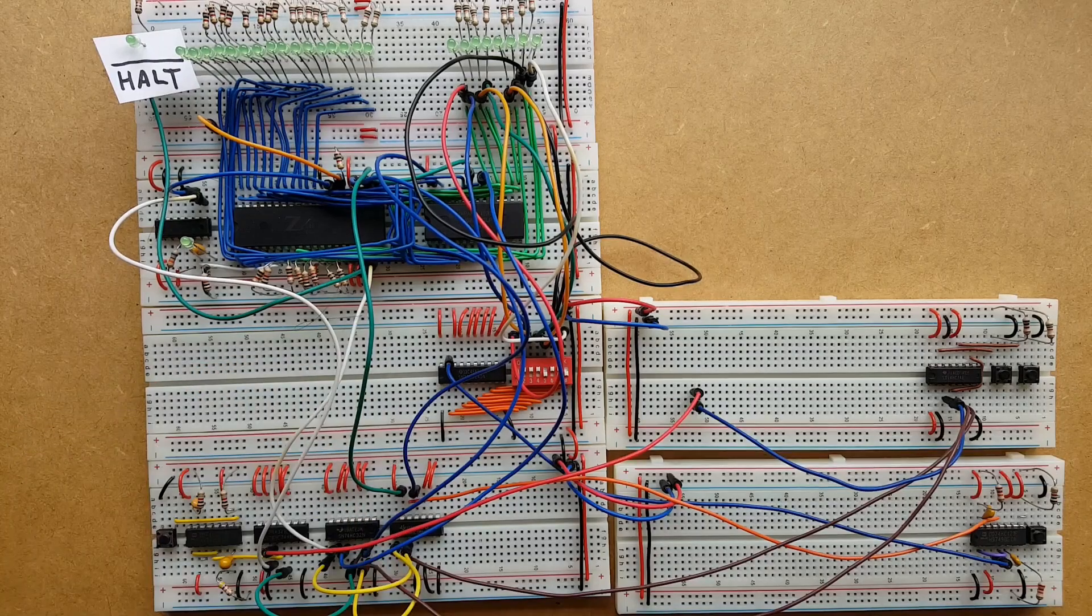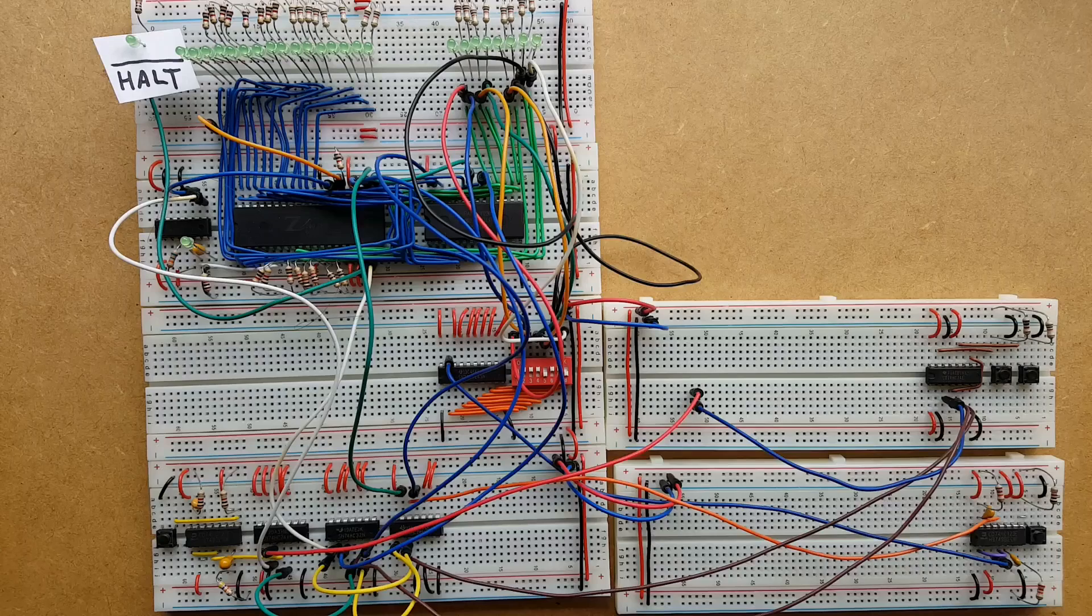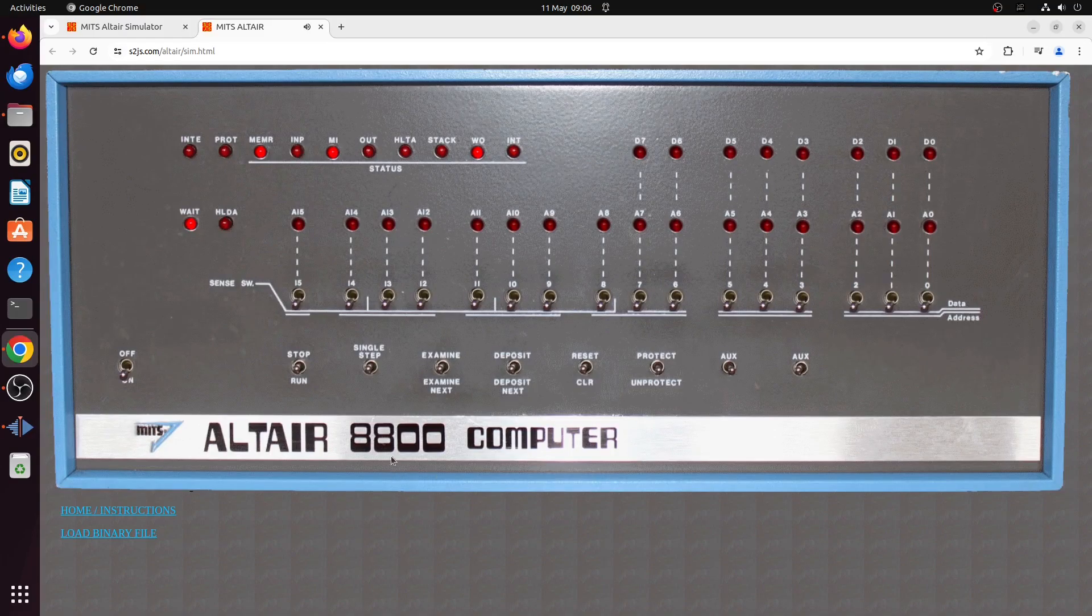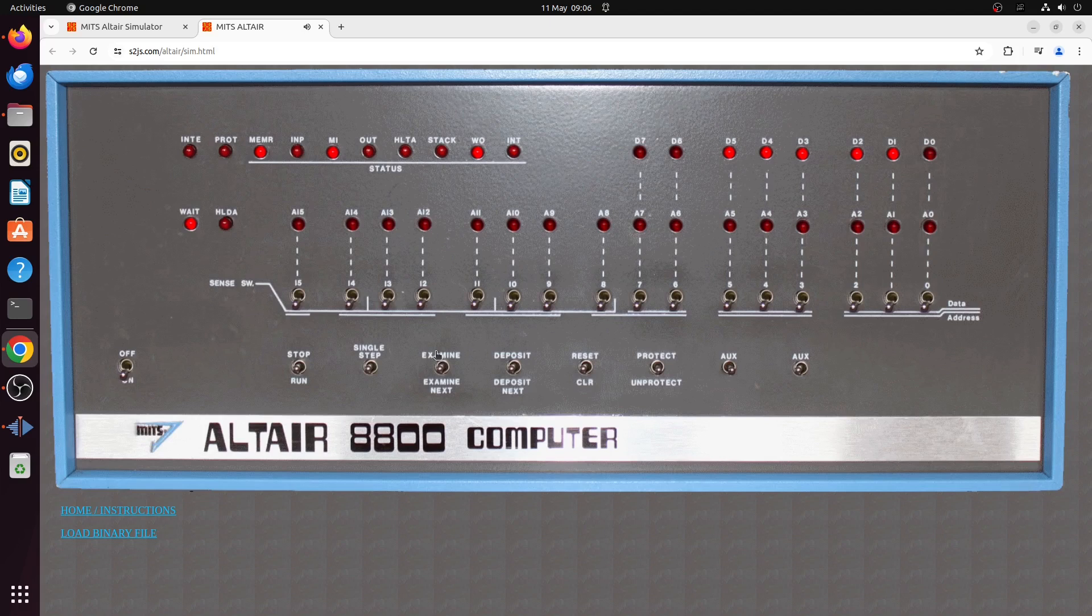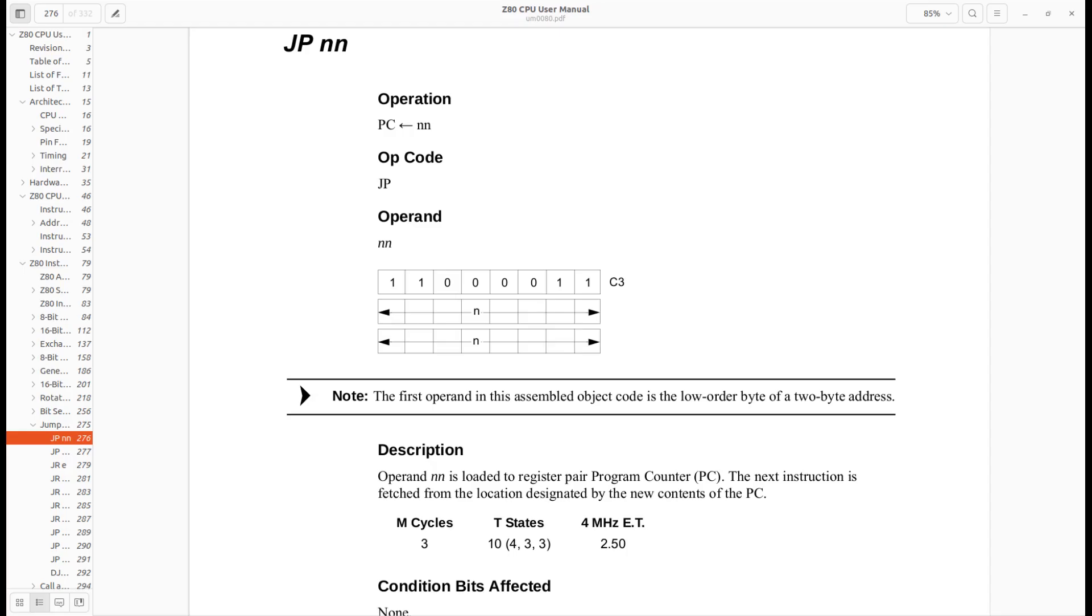But me and the human man, we're going to keep going and build the extra functions to make it just like the real Altair. So we'll be making the EXAMINE function, the DEPOSIT NEXT function, and the SINGLE STEP function. But we'll leave it there for a few weeks. That way, you lot can have a go at building them first. Here's a clue to get you started.